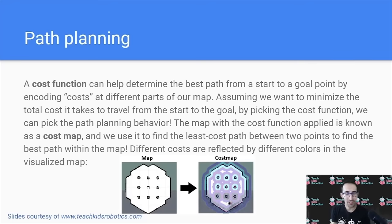Now, in path planning, we have something known as a cost function, which can help determine the best path from a start to a goal point by encoding costs at different parts of our map. And using this cost function, we can help encode information about where we would or would not like to travel. For example, an obstacle can have a high cost associated with it, so that as we are determining how to travel between the map, if we are attempting to reduce the cost of a path, we would avoid any kind of obstacle.